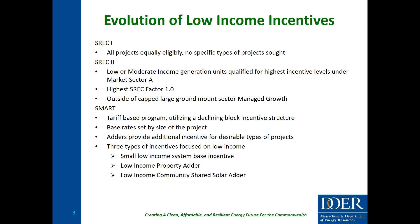Under SREC 2, we differentiated projects according to market sectors A, B, C, and a managed growth category. Under Market Sector A, we had a specific incentive for low- or moderate-income generation units — those that sent all of their energy to qualified low- or moderate-income housing developments or housing authorities. These were either installed directly on the properties or had virtual net metering agreements with the qualified housing authority, and we gave them the highest incentive factor.